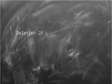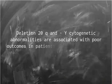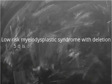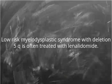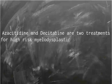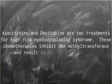Deletion 20q- and minus-Y cytogenetic abnormalities are associated with poor outcomes in patients with Myelodysplastic Syndrome. Low-risk MDS with deletion 5q- is often treated with lenalidomide. Azacitidine and decitabine are two treatments for high-risk MDS; these chemotherapies inhibit DNA methyltransferase and result in DNA hypomethylation.